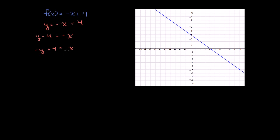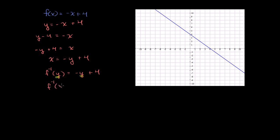Just because we're always used to writing the dependent variable on the left-hand side, we could rewrite this as x is equal to negative y plus 4. Or another way to write it is we could say that f inverse of y is equal to negative y plus 4. So this is the inverse function right here, and we've written it as a function of y. But we can just rename the y as x, so it's a function of x. So we get f inverse of x is equal to negative x plus 4.